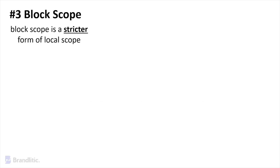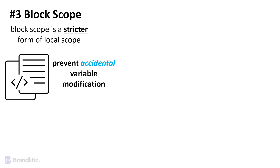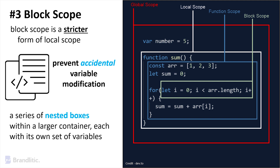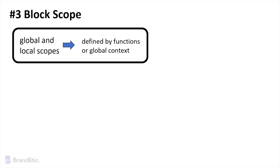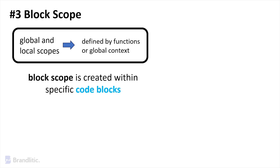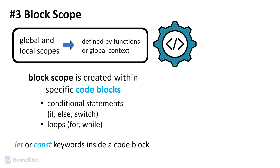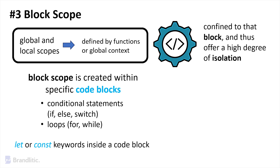Block scope is a stricter form of local scope and prevents accidental variable modification from outer scopes. Block scope in JavaScript is like a series of nested boxes within a large container, each with its own set of variables. Unlike global and local scopes which are defined by functions or global context, block scope is created within specific code blocks such as conditional statements like if, else, switch, and loops like for and while. Variables are declared with the let or const keywords inside a code block, and these variables are confined to that block, offering a high degree of isolation.